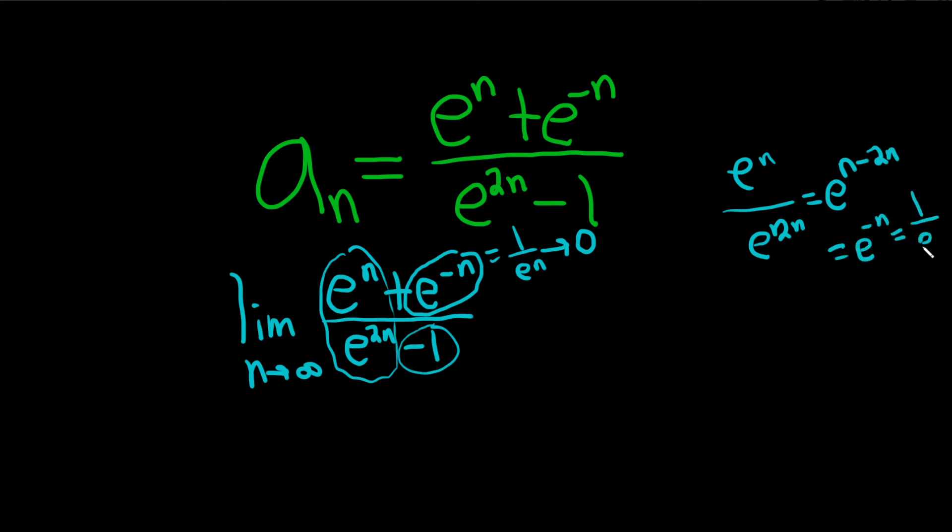Which is really like 1 over e to the n. Or you can just look at it and say, you have n here, 2n here. You're going to lose an n, so it's 1 over e to the n. In any case, this approaches 0.